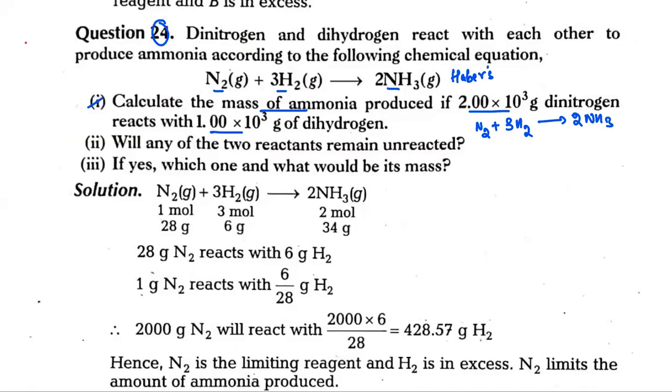So first of all, what do we see? How many moles are required according to the balanced chemical equation? There is 1 mole nitrogen, 3 moles of hydrogen, which gives 2 moles of ammonia. Nitrogen atomic mass is 14, so the nitrogen molecule is 28 grams. Hydrogen atom is 1, but the hydrogen molecule is 2 grams.